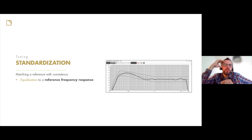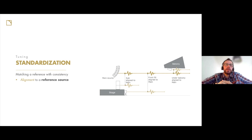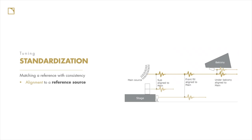First in tuning is standardization: we want to match a reference with consistency. The reference frequency response defines how we want the system to behave — that's how we characterize our system. This reference response is established by a reference source, mainly our main array first, and then by aligning that main with the subwoofer. The combination of both defines our reference response. Then, adding more elements as complements to the system — they are all implemented with the wish to maintain the reference response established by the reference source covering most of the audience. We want everyone to experience the same show.